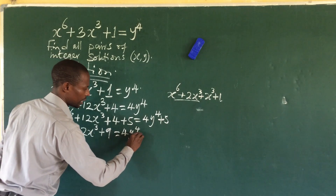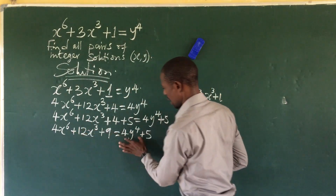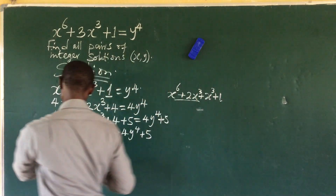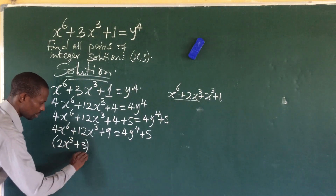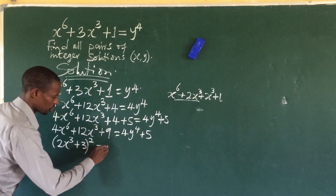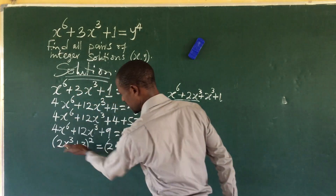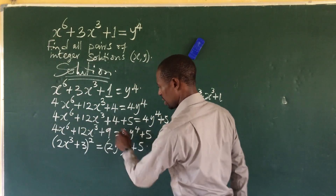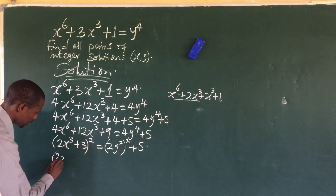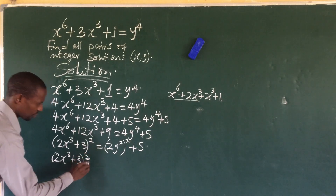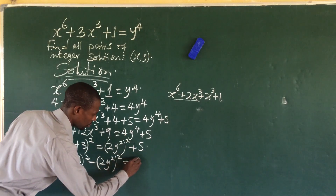After adding 5 to both sides, the left side becomes 4x⁶ plus 12x³ plus 9, which equals 4y⁴ plus 5. We can now rewrite the left side as a perfect square: (2x³ + 3)², and the right side as (2y²)² plus 5. Sending the right square to the left gives us: (2x³ + 3)² minus (2y²)² equals 5.